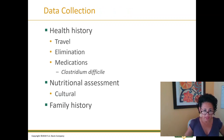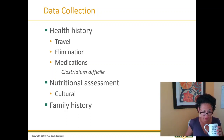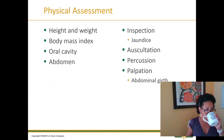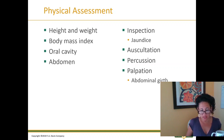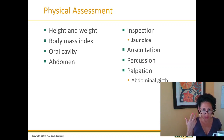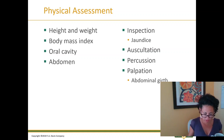Collecting health history: travel, elimination, C. diff, nutritional assessments, culture and family history, physical assessment — height, weight, body mass. Inspection for jaundice: where do we assess for jaundice? We can usually see the sclera of the eyes has a yellowish tint to it. It can also be seen in mucous membranes and other areas of the body. Auscultation, percussion, palpation, abdominal girth.